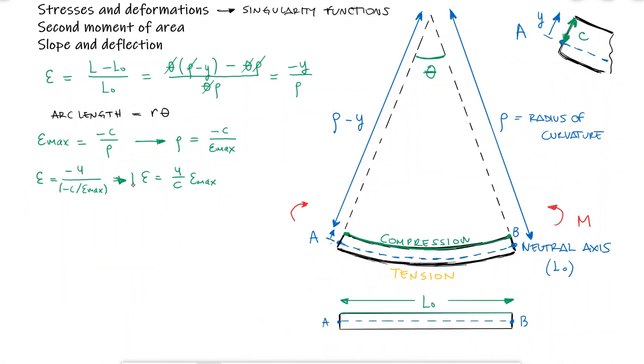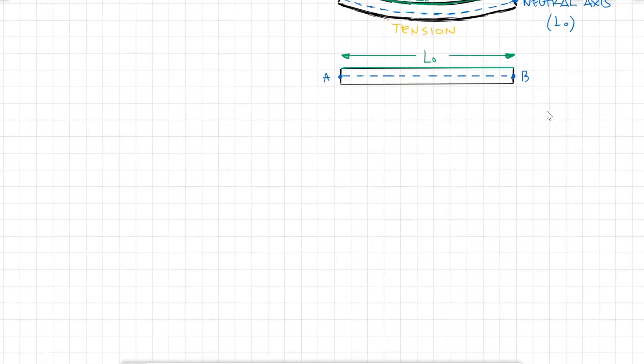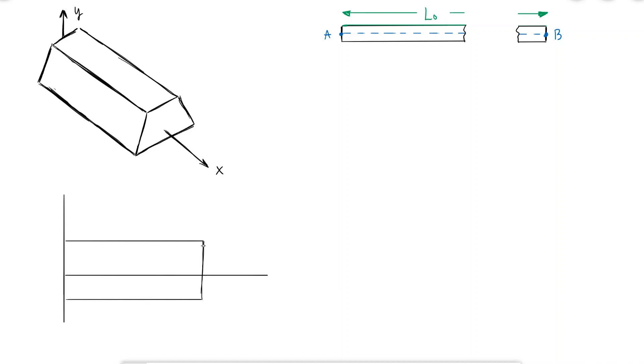If I multiply this expression by the elastic modulus, I find that the stress is equal to y over c times the maximum stress. Let's perform a cut on this beam, which can be any beam of a constant cross-section area, and let's take a look at a zoomed-in version of the side view.